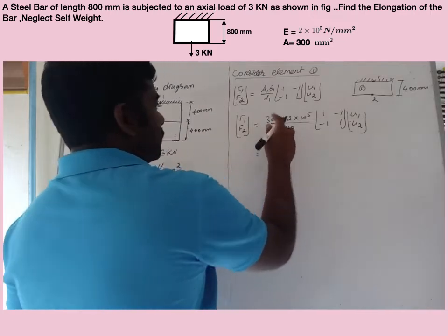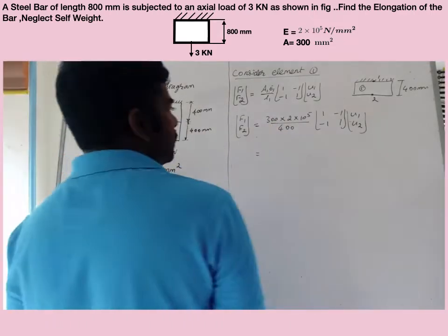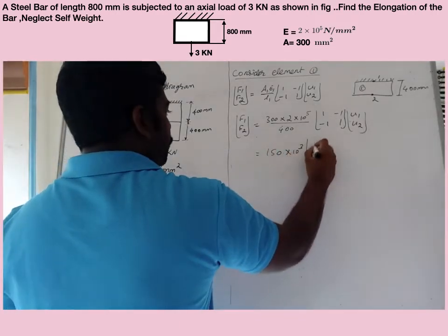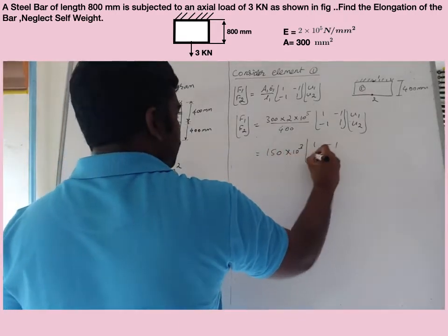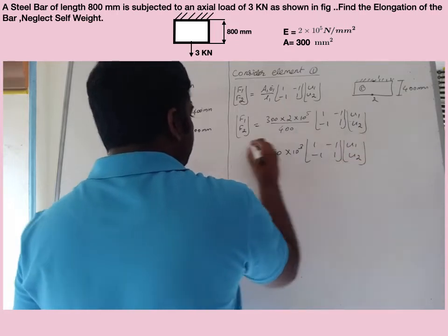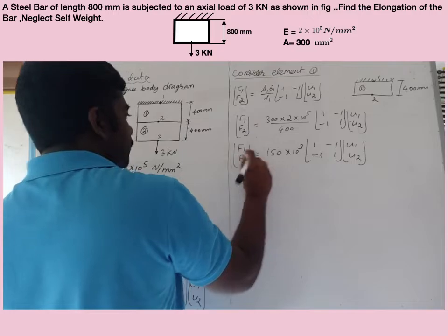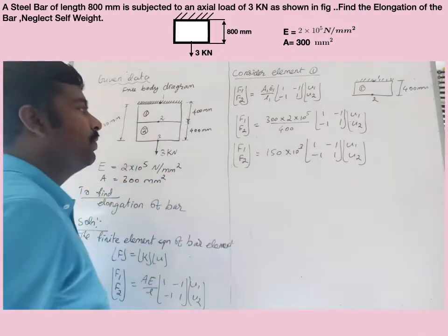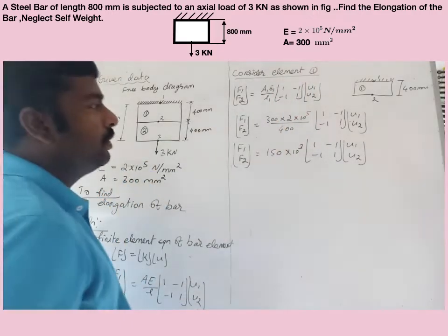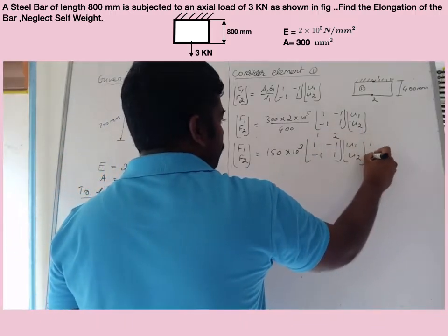Solving this equation, you will get 150 into 10 cube times [1, -1; -1, 1] times [U1; U2]. So for element 1 with nodes 1 and 2, I label the degrees of freedom as 1 and 2.